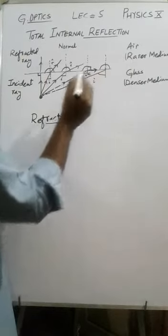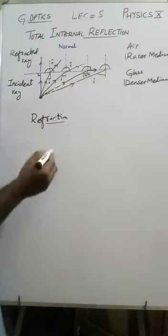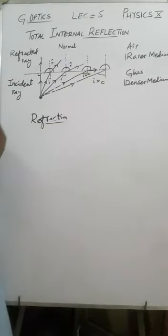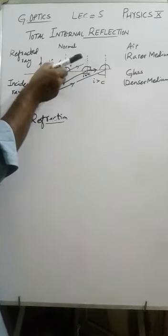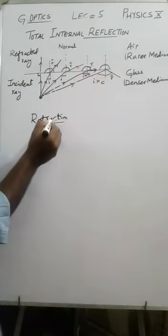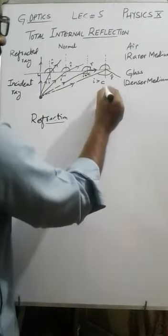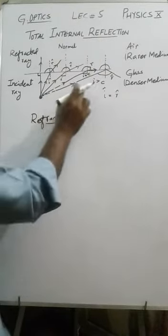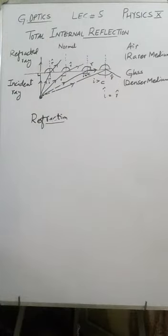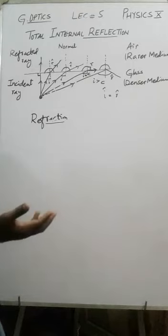When the angle of incidence becomes greater than the critical angle, the ray no longer refracts. The light was bending and bending, and eventually it turns back. This becomes the angle of reflection, and the angle of incidence equals the angle of reflection according to the laws of reflection. All rays with an angle of incidence greater than the critical angle are reflected back — this is called total internal reflection.